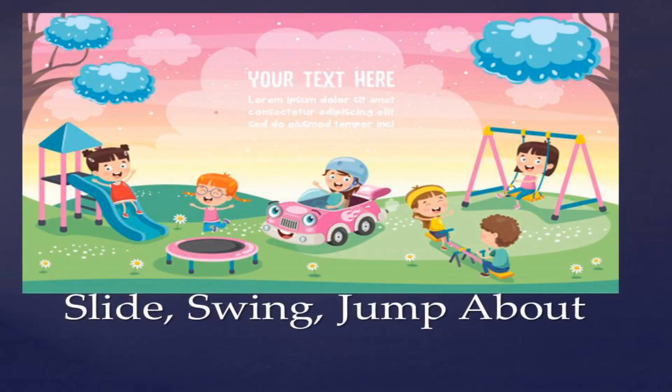The girl has gone up on the ladder and is coming down through the slide. The local word for it is called a slide. The boy is jumping on a bouncy mat, also called a jump about. The third boy is driving a battery-operated car. The pair of students sitting down are playing the seesaw — this way of moving about here and there is called a seesaw.